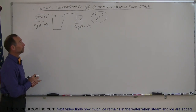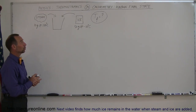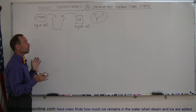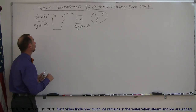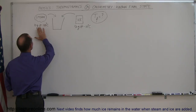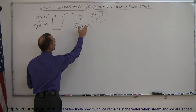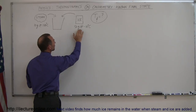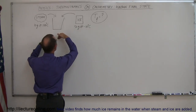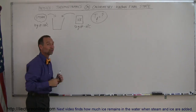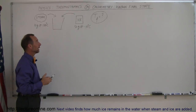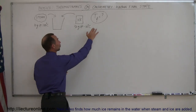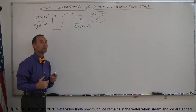Our next calorimetry problem involves a known final state. We're taking 10 grams of steam at 100 degrees centigrade and mixing it with 50 grams of ice at minus 10 degrees centigrade, putting it together in a bucket. The final state will be some water in that bucket, and we're trying to find the final temperature when the ice and the steam are mixed.